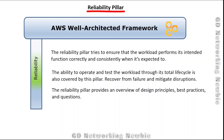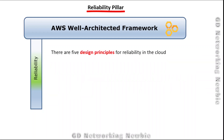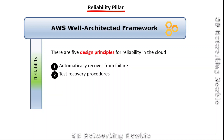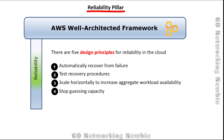The reliability pillar provides an overview of design principles, best practices, and questions. There are five design principles for the reliability pillar in the cloud: automatically recover from failure, test recovery procedures, scale horizontally to increase aggregate workload availability, stop guessing capacity, and manage change in automation.